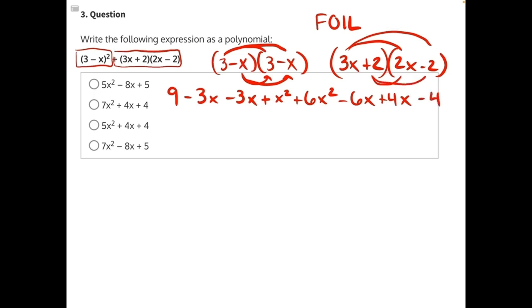Now we have a long string of terms that we need to find all of our like terms within and combine in order to simplify. Let's make it easier on ourselves by putting this all in order of descending power.